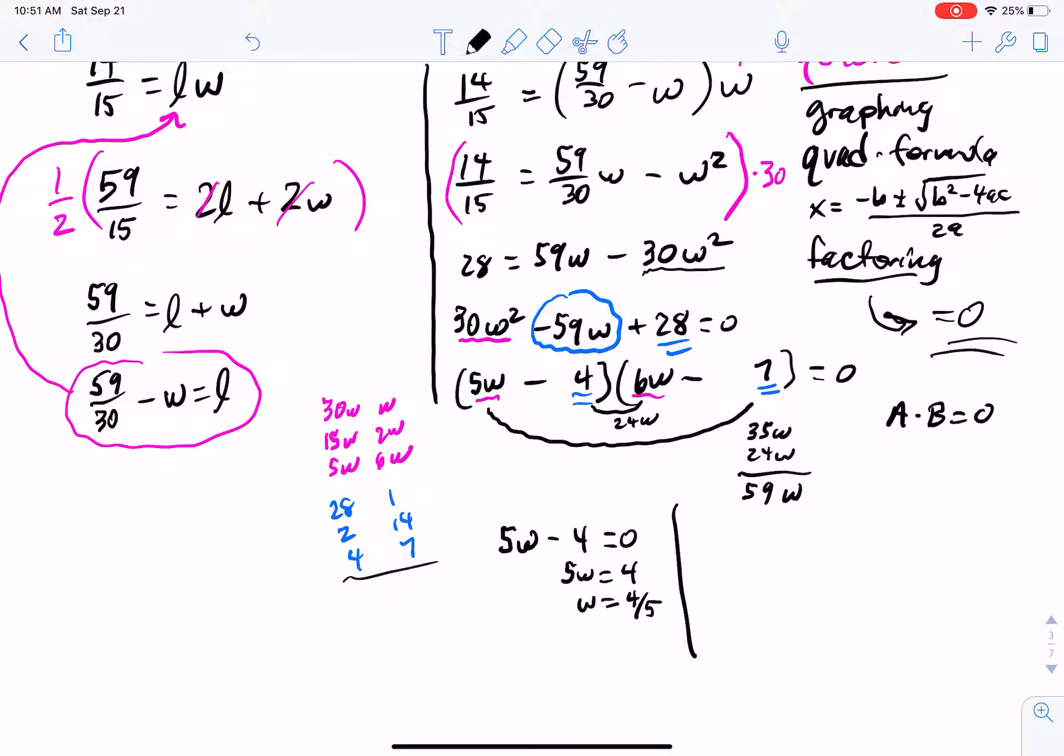All right. Or maybe it's the second one. Maybe it is 6w minus 7 is equal to 0. Add the 7 over. So 6w is equal to 7. And then divide both sides by 6. So w is equal to 7 sixths. So I have two possible answers. And we need to consider both of them.